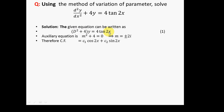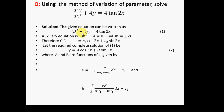The auxiliary equation is m² + 4 = 0, giving m = ±2i. Therefore the complementary function is c₁cos(2x) + c₂sin(2x). So the two parts of the complementary function are u = cos(2x) and v = sin(2x).